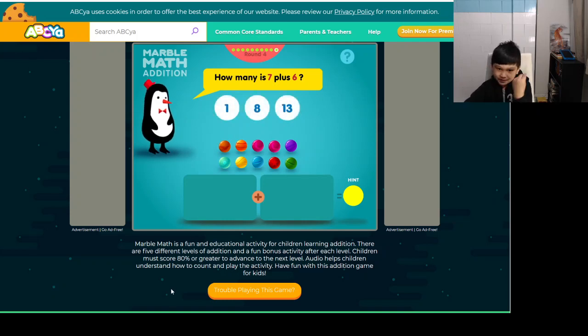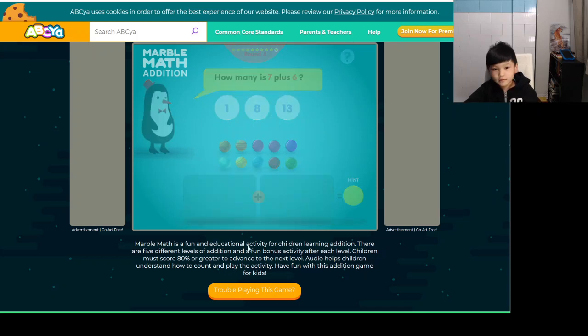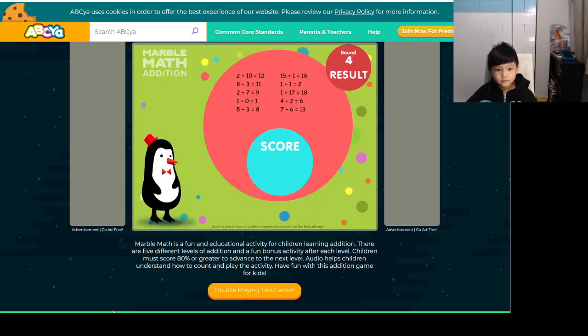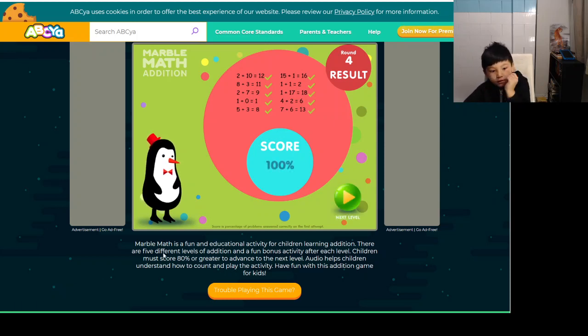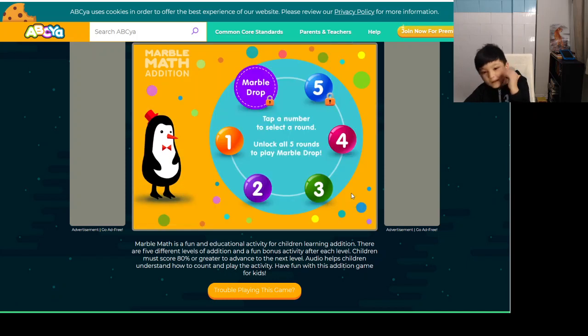10 plus 6 plus 3. 10 plus 6 equals 16, and 10 plus 3 equals 13. These are our results for round 4. We got 100%. Let's go to the next level, guys.